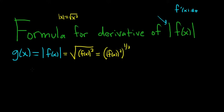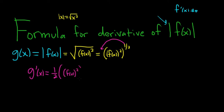Now we can take the derivative. When we take the derivative, we're going to be using the chain rule. So g prime of x: put the one-half in the front, we get one-half, then leave the inside alone — f of x squared — and then one-half minus one is negative one-half, times the derivative of the inside. Here we have to use the chain rule again: bring down the two, then f of x to the first power, which is just f of x, times the derivative of the inside, which is f prime of x.